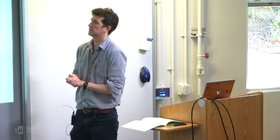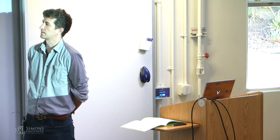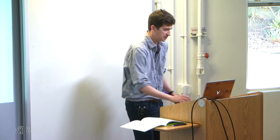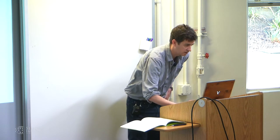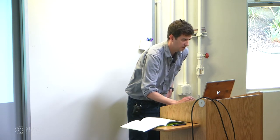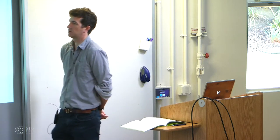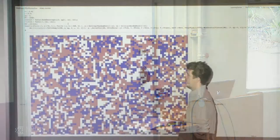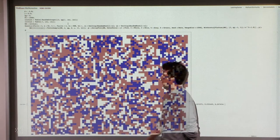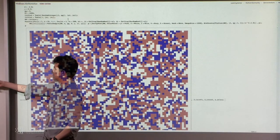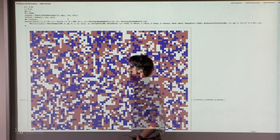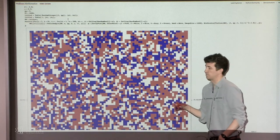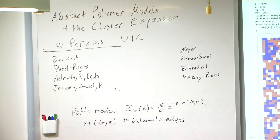I'm going to talk about some algorithms that you can derive from some classical statistical physics tools. I wanted to start, before getting into my talk, by showing a couple of simulations. The running example I'll be using today is just the ferromagnetic Potts model. I wrote the partition function here: the sum over all q-colorings of a graph, e to the minus beta times the number of bichromatic edges induced by this coloring.